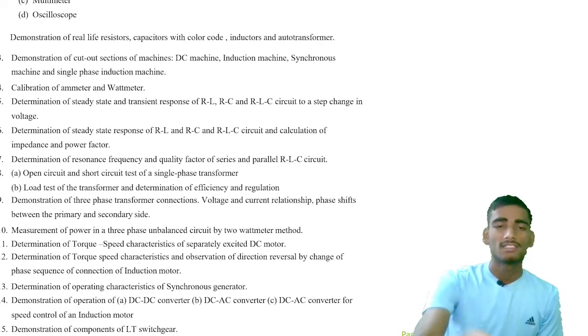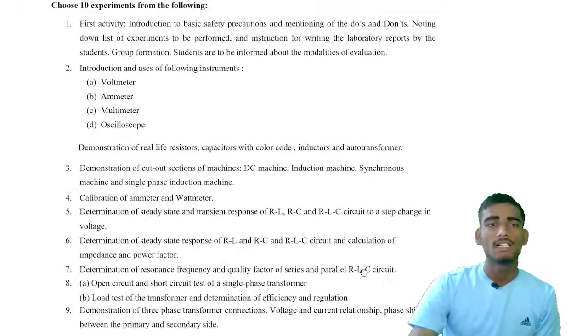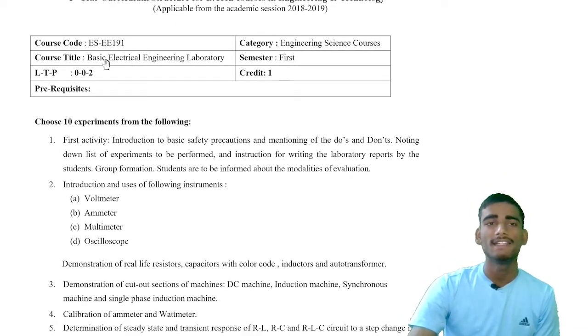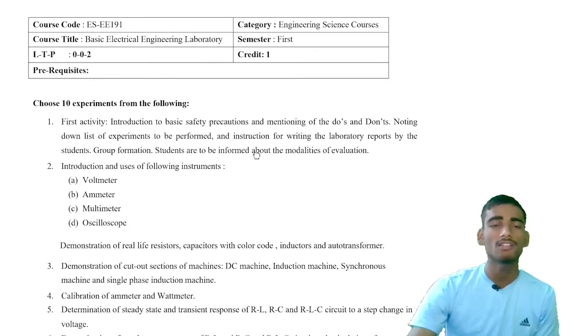You can clearly visualize on the screen that this is the complete syllabus. The course code is ES EE 191. I've already explained that one means first semester and 91 is basically the subject code. It is in the category of engineering science courses.